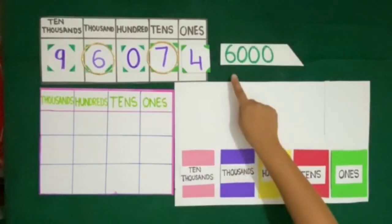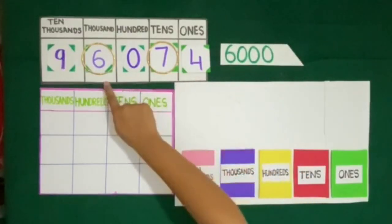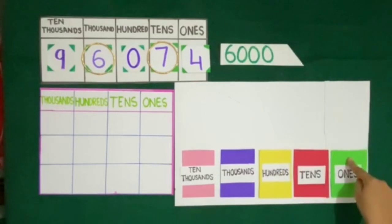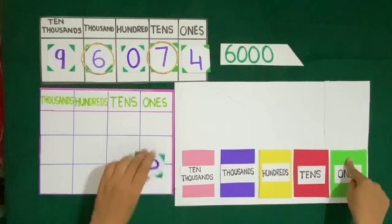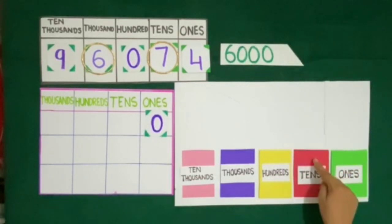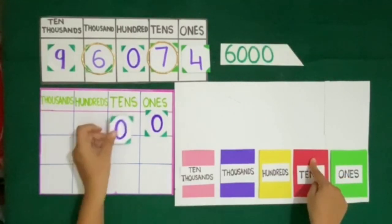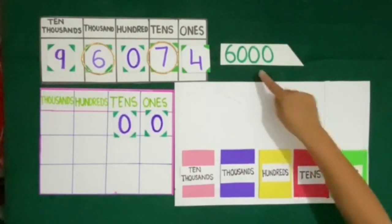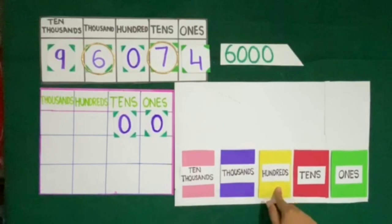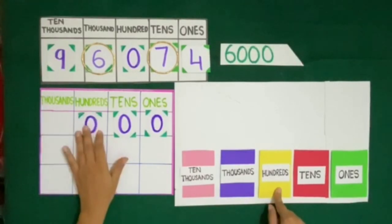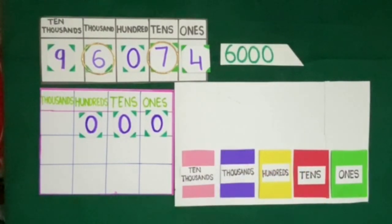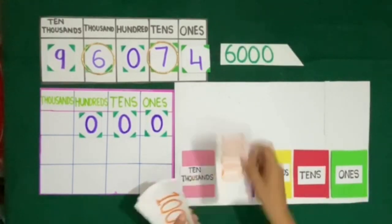Now we will take currency notes according to the place value of 6, that is 6000. So here it is 0 at the 1's place, so no note of rupees 1 and we will place 0 at 1's place. Next we have 0, which means no notes of rupees 10, and we will place 0 at tens place. Next there is again 0, which means no notes of rupees 100, so we will place 0 at 100's place. Next we have 6, which means 6 notes of rupees 1000.